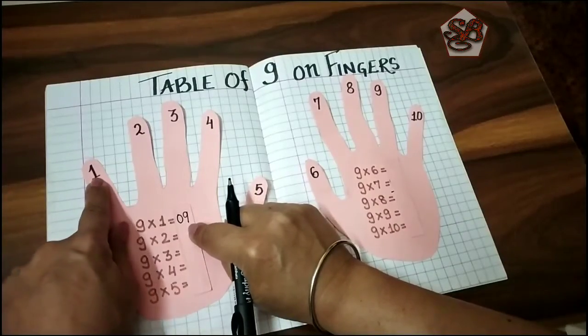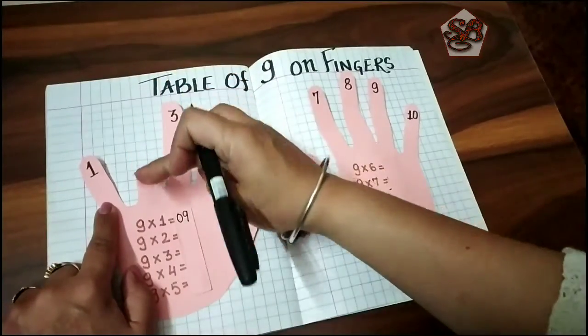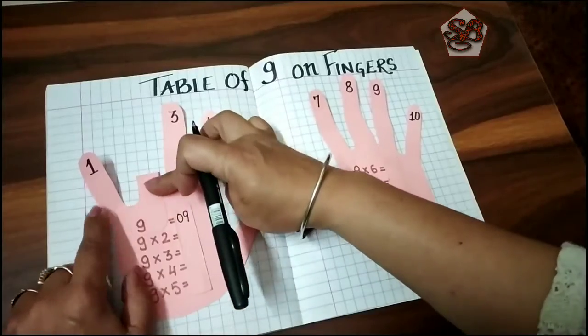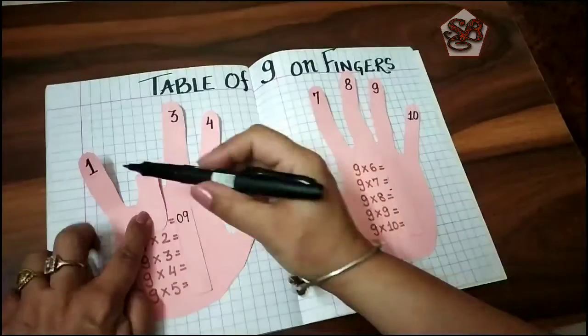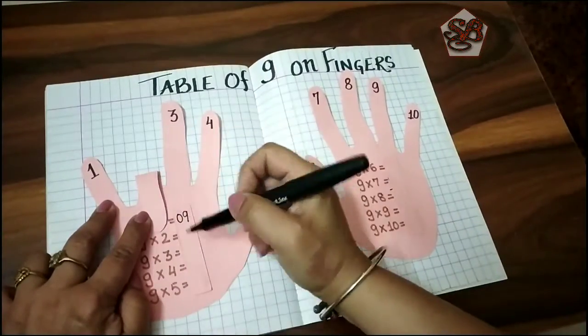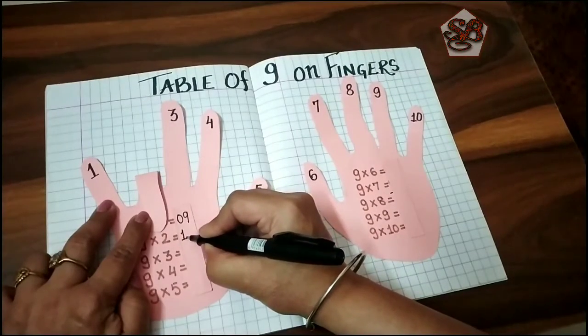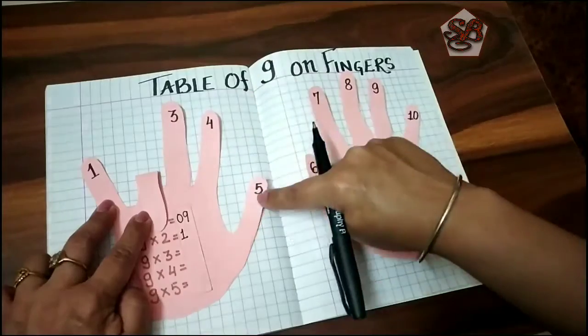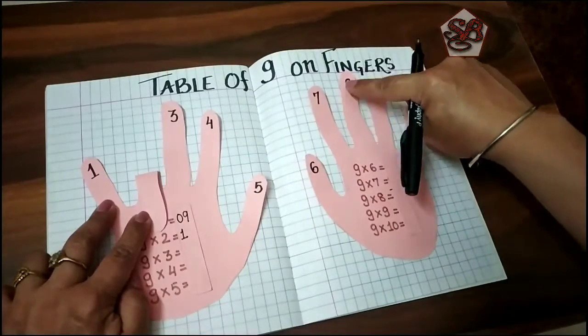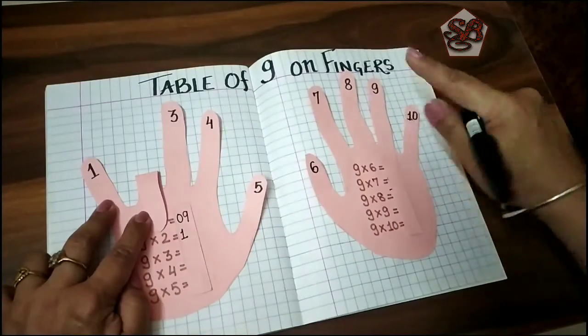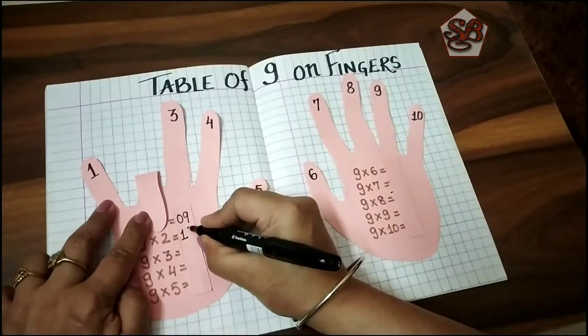Let's see nine twos are. Fold the second finger. We have only one finger on the left hand side so we write one over here, and one, two, three, four, five, six, seven, eight fingers on the right hand side. So we write here eight. Nine twos are 18.